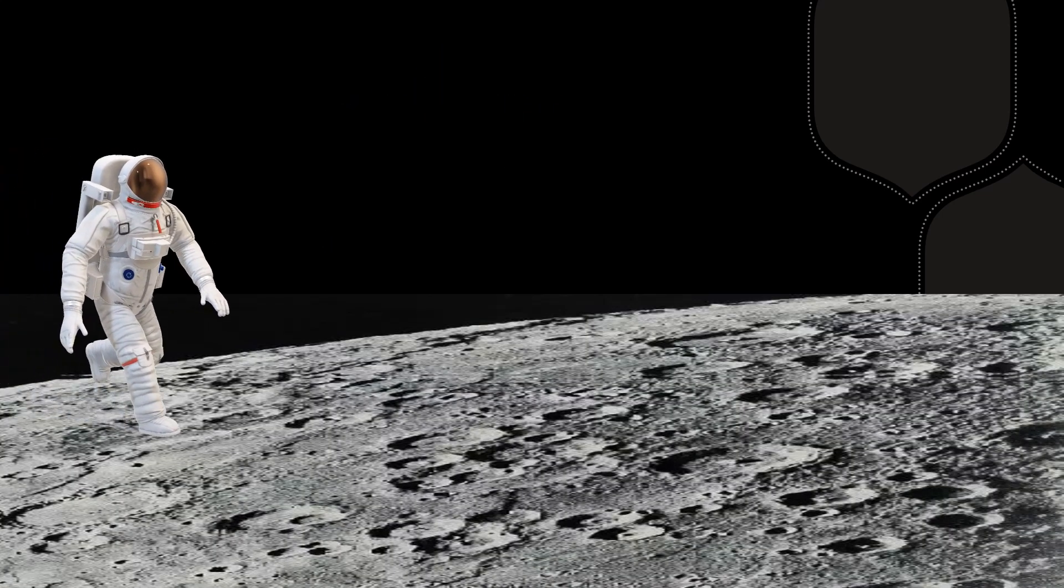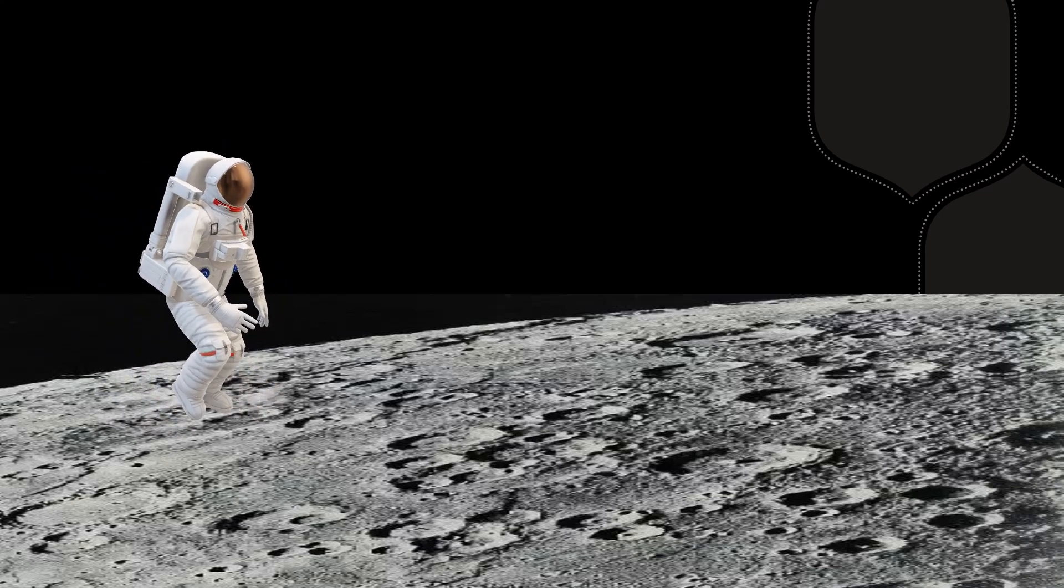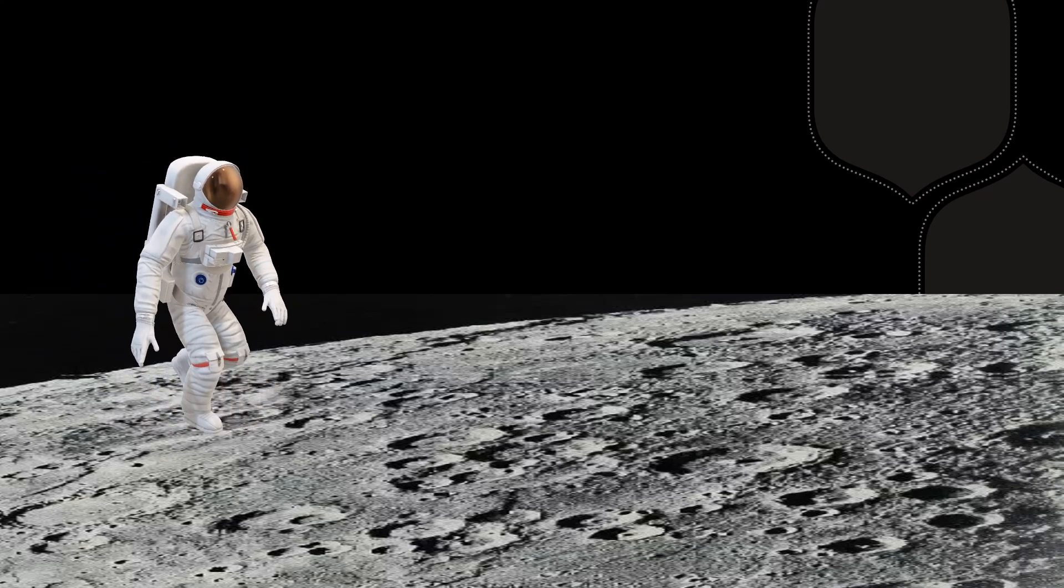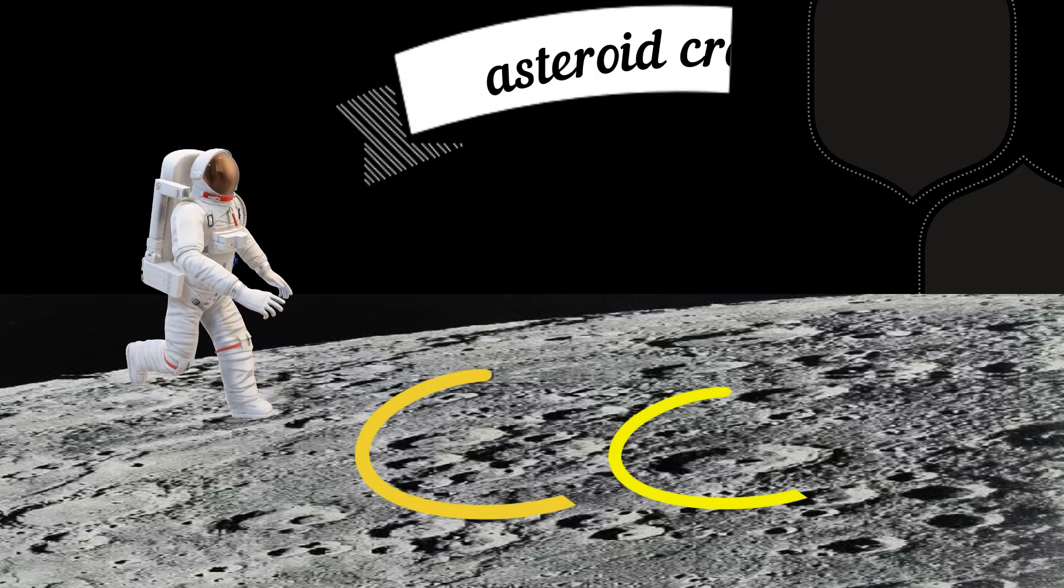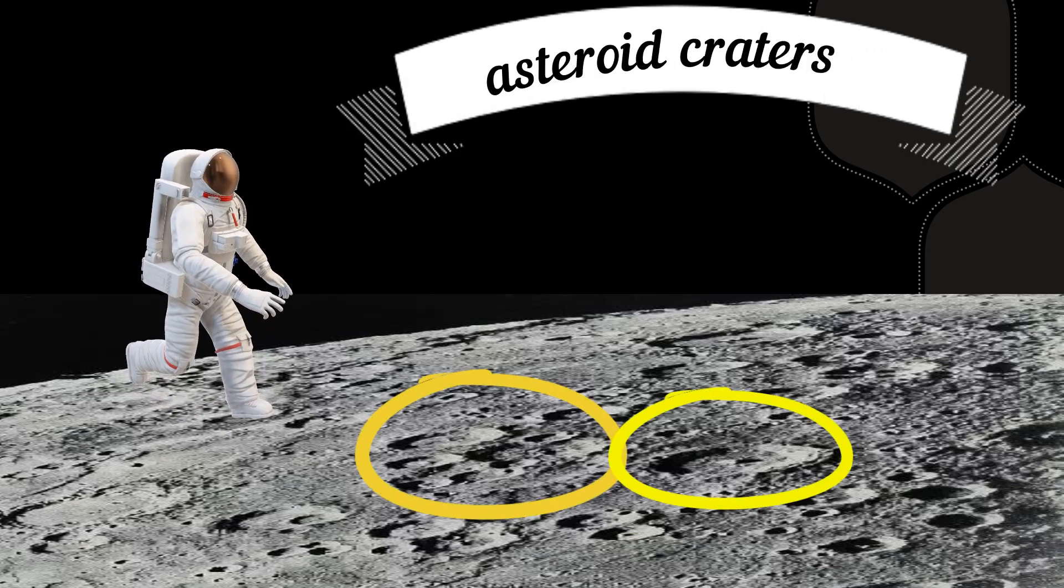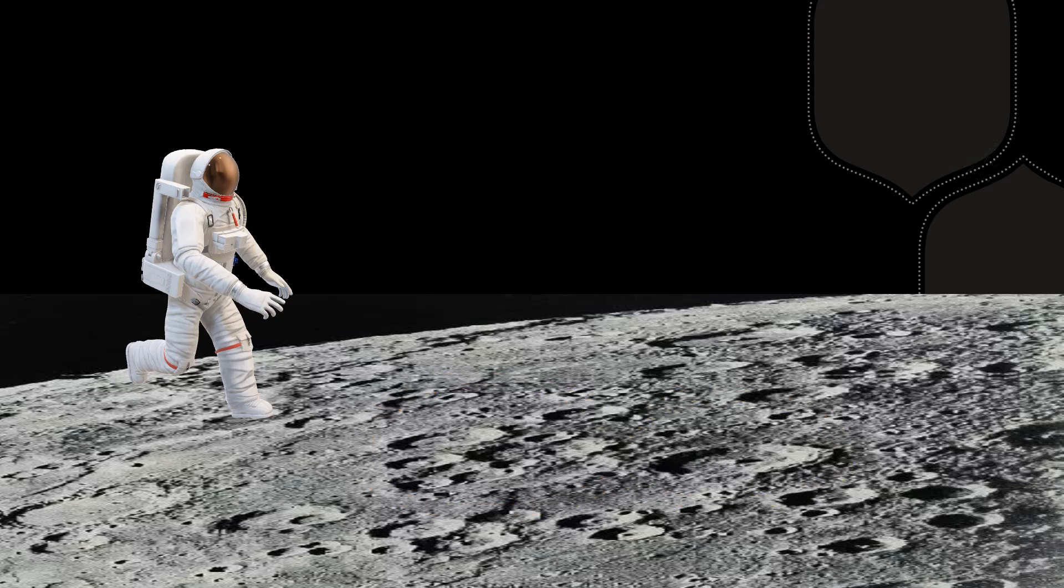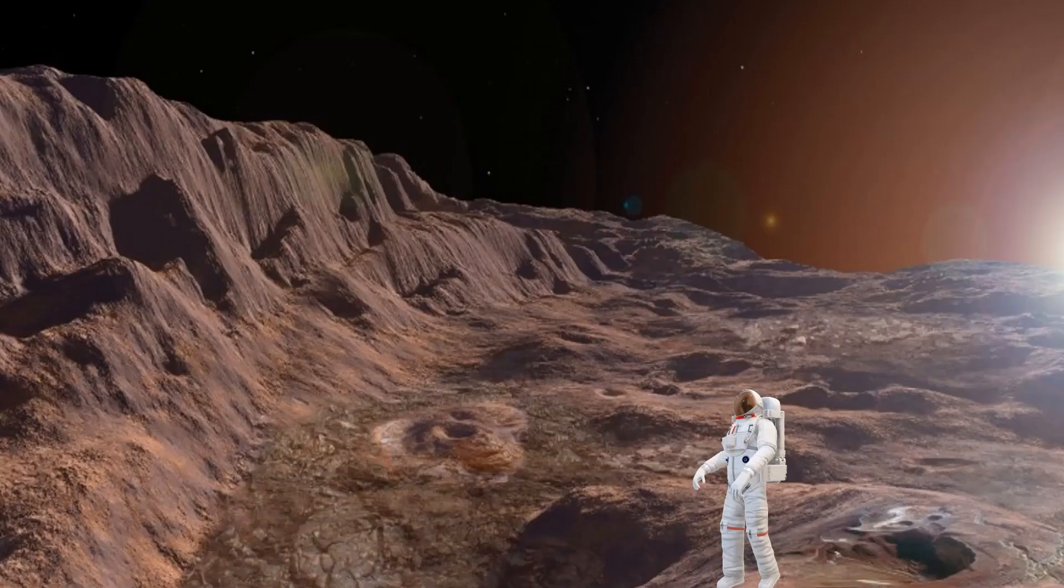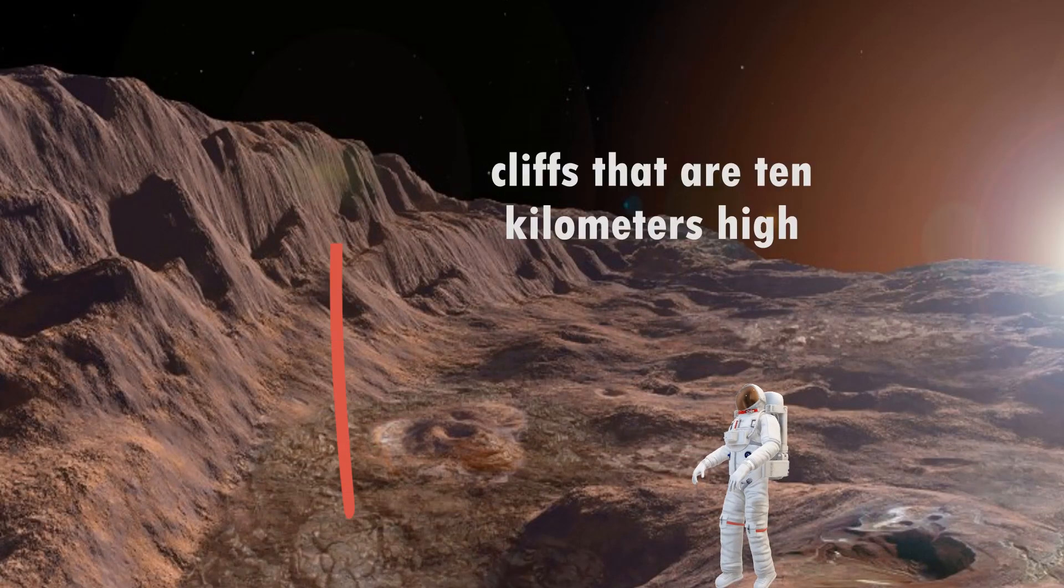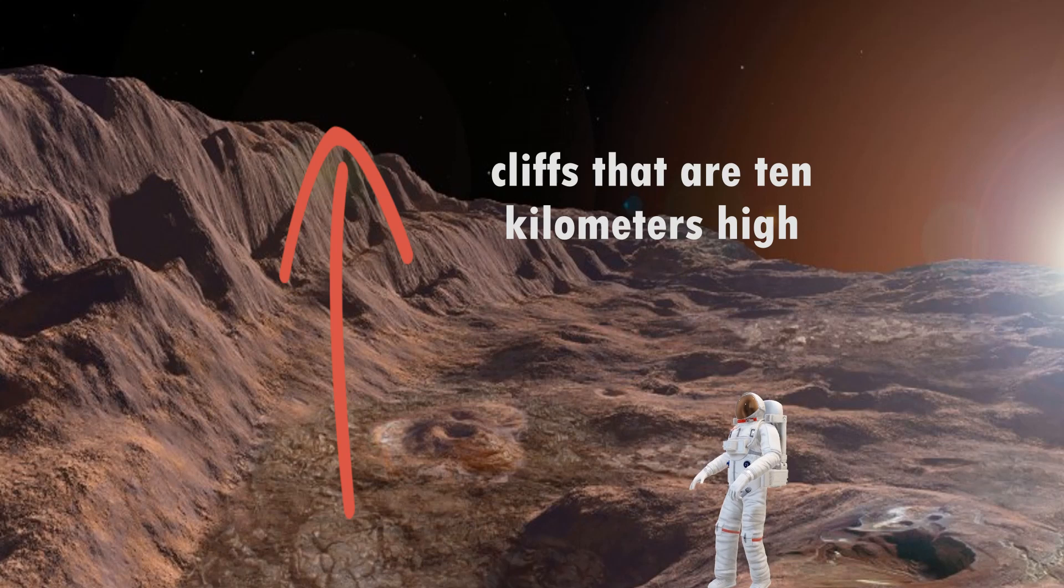When we take a walk on the surface of Mercury, we found that there are many asteroid craters on the surface. The rock craters look like small holes that may be formed by meteorites hitting the surface. There are also cliffs which are 10 kilometers high on Mercury.